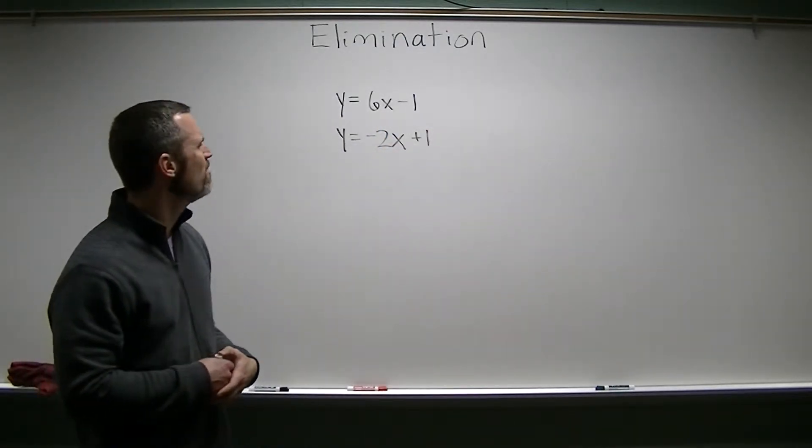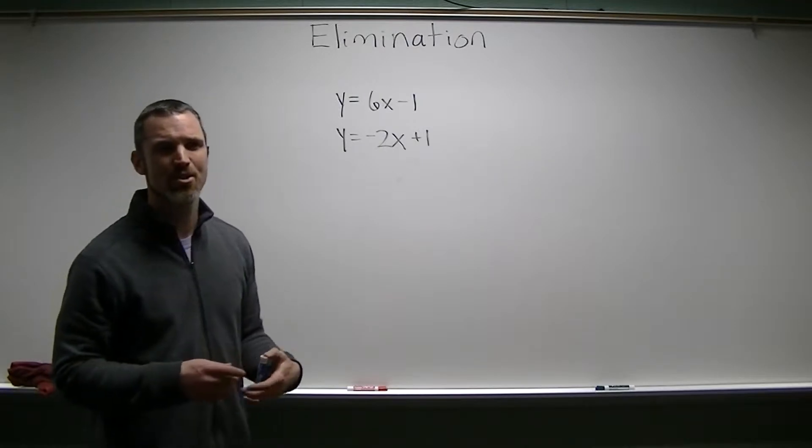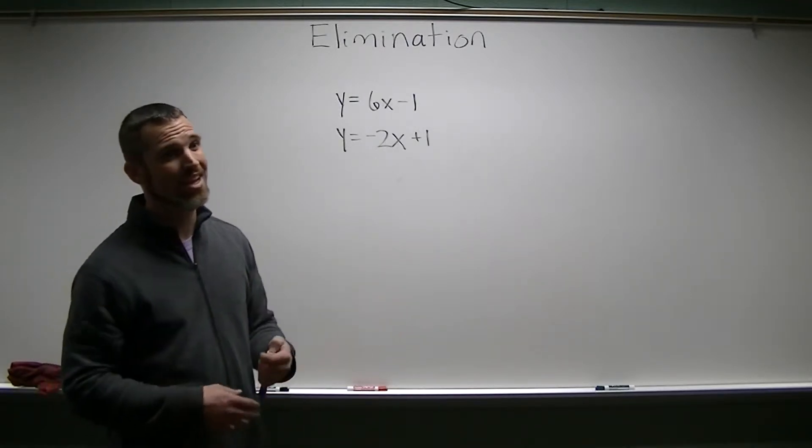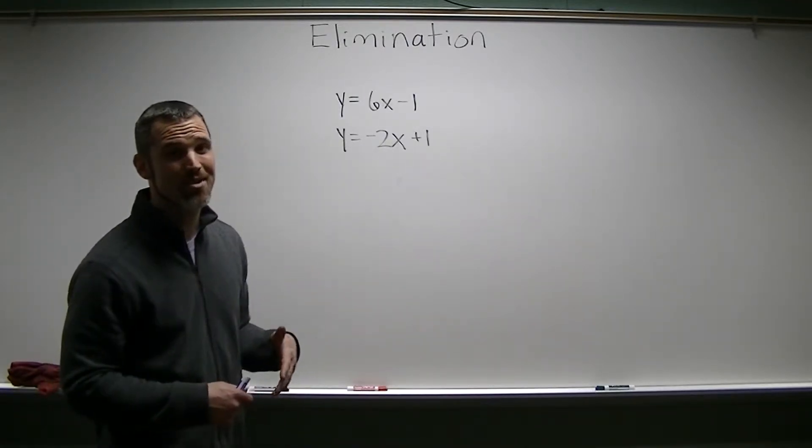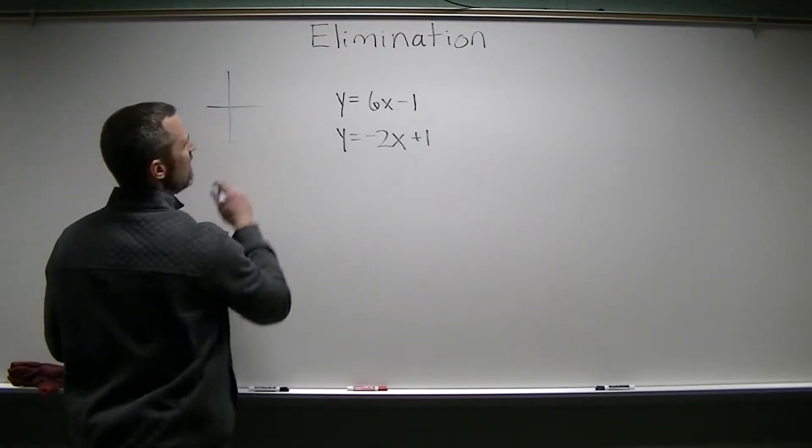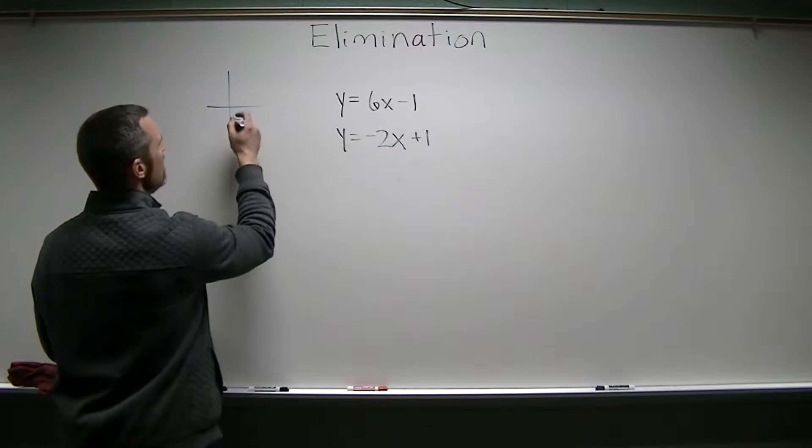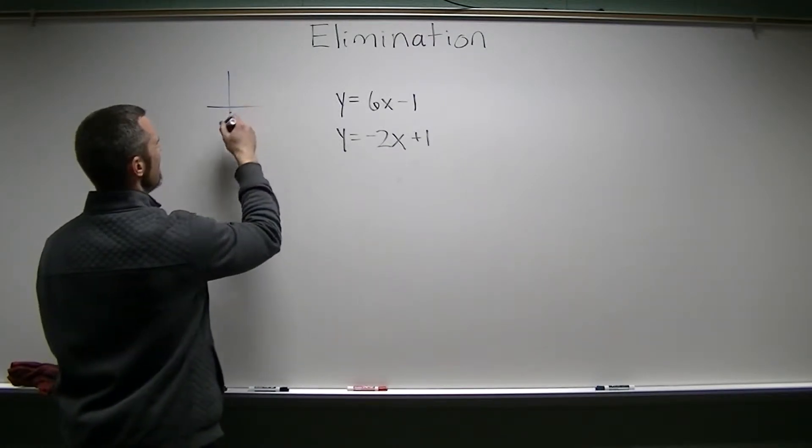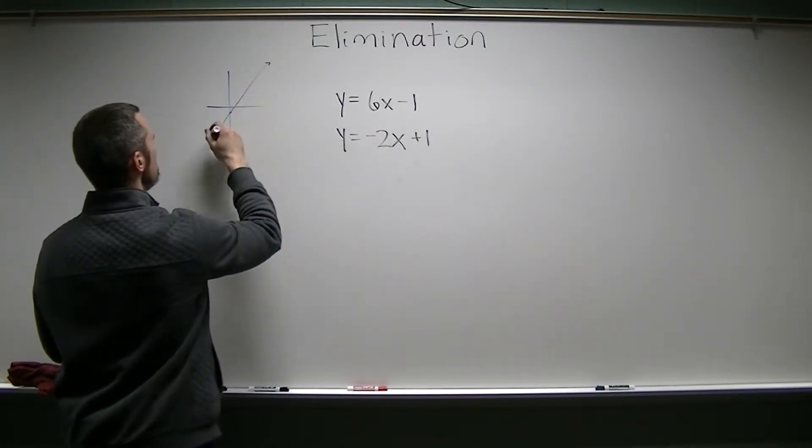Hey, that's two slope intercept forms of linear equations, so I already know what those lines look like. And I could actually make a quick sketch of this one if I wanted to, and maybe I will. You know, so I know negative 1, that's the y-intercept, 6, it's got a pretty big slope. It's looking something like that.